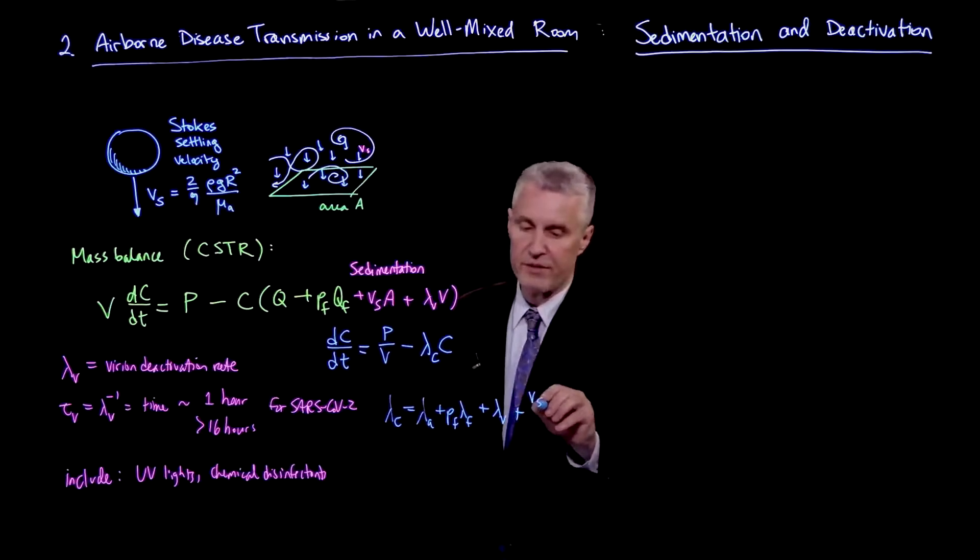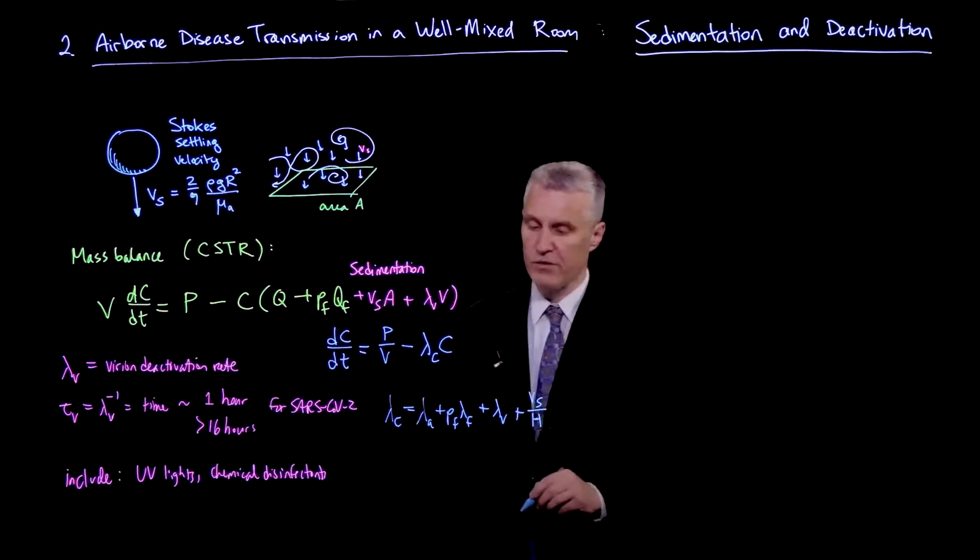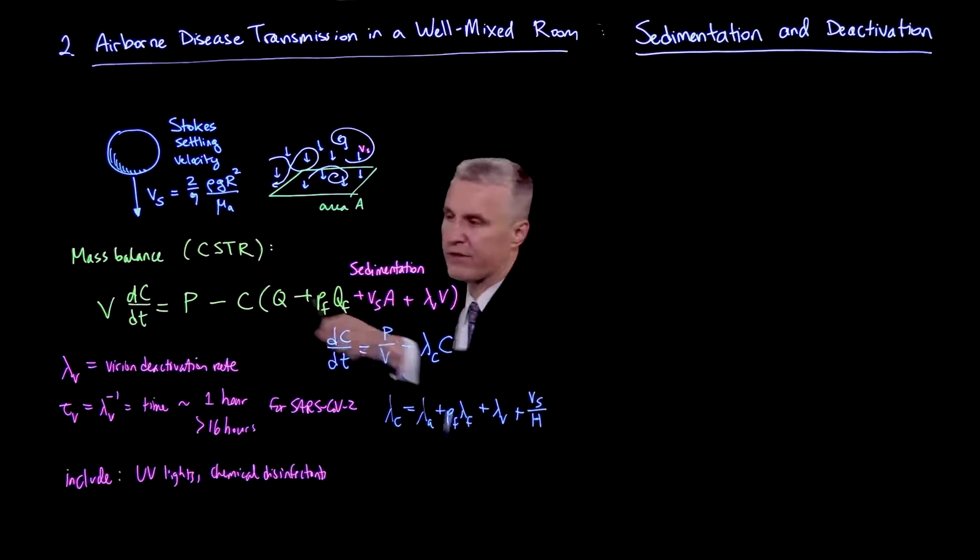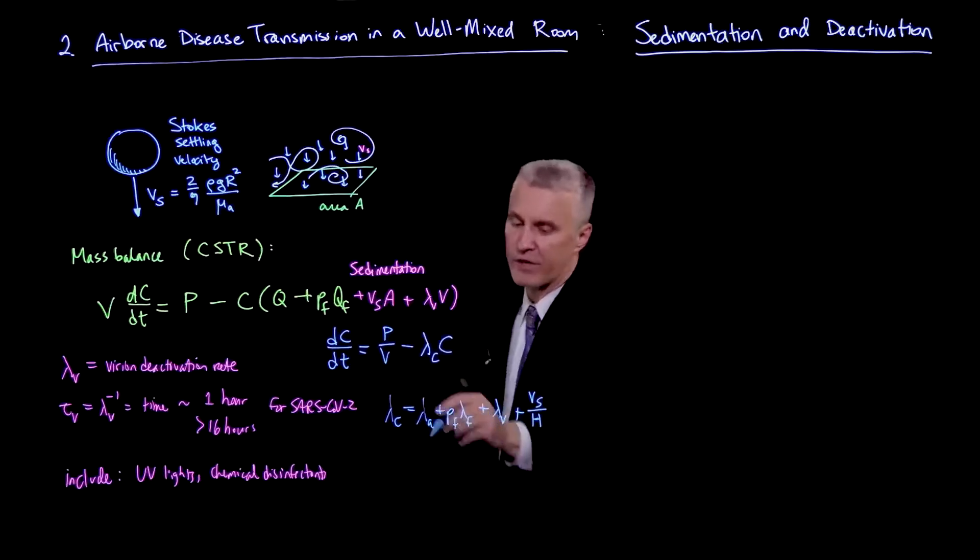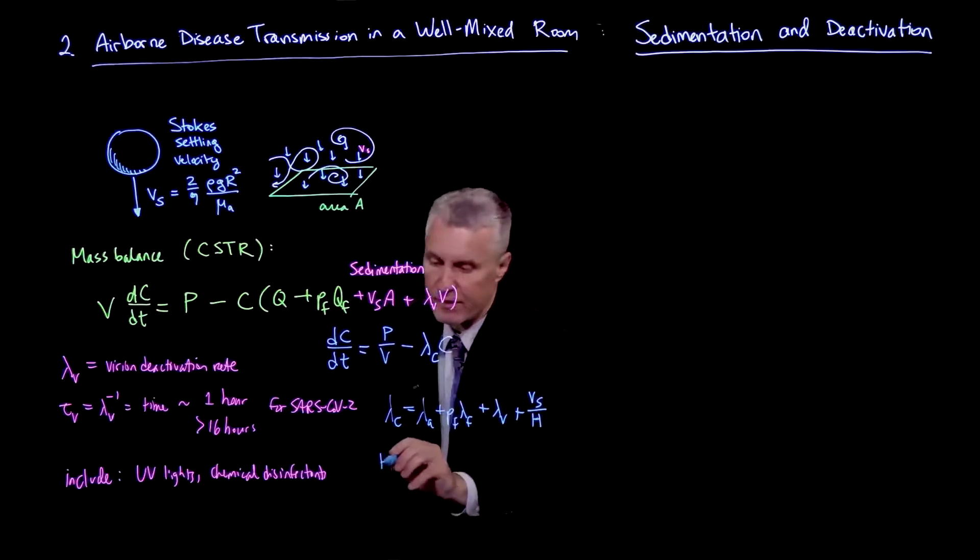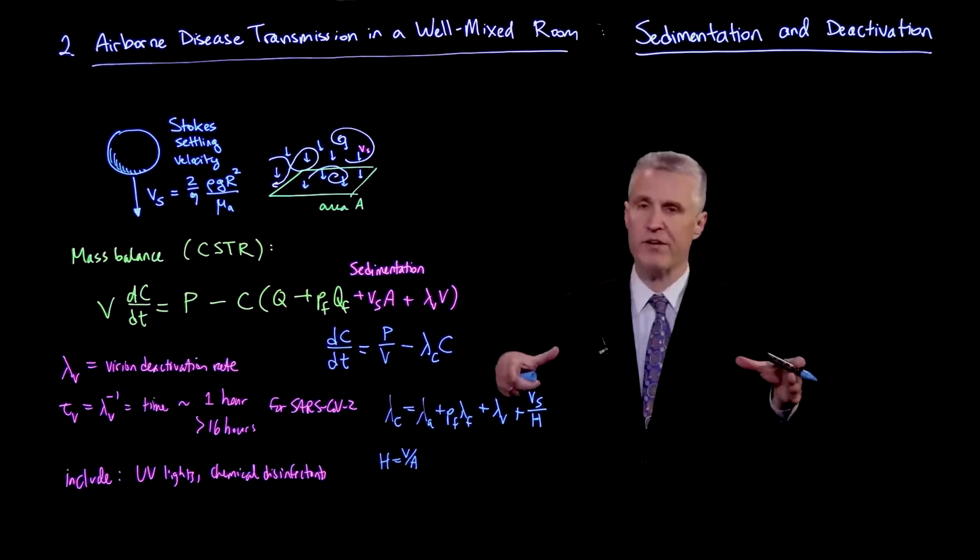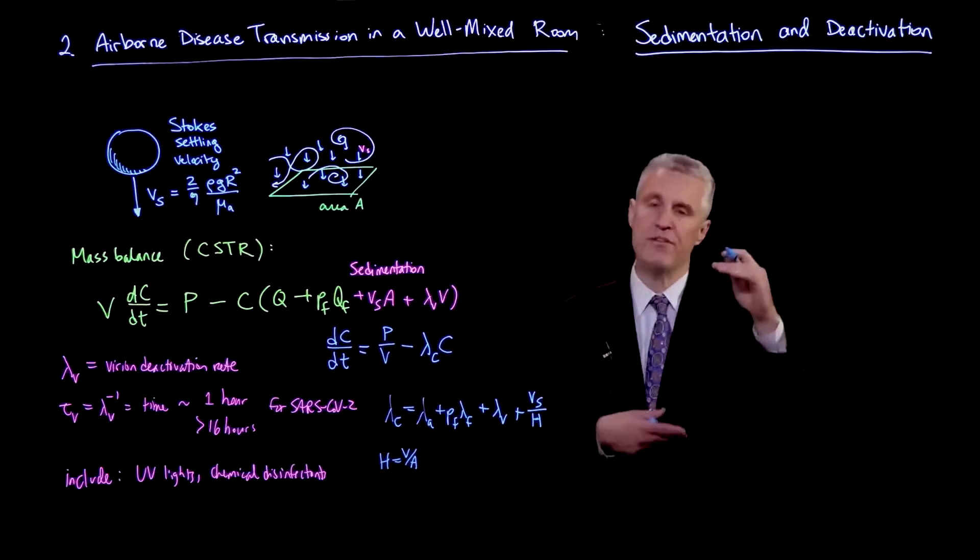And then the sedimentation term is the one I want to focus on right now. That is Vs. We can write as Vs over H, where I've divided by V. And I'm writing V over A is H. So if we have a rectangular box of a room, then H is the ceiling height.